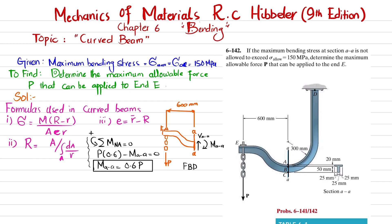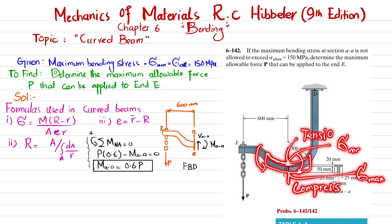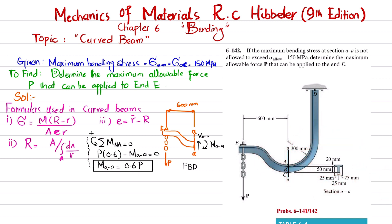This moment will tend to straighten the curved beam. As a result, the top portion of the section will be in tension and the bottom portion will be in compression. To find the maximum allowable load, we will calculate the maximum bending stress at the top (point A) and at the bottom (point C) separately, and then determine the corresponding P values from each.